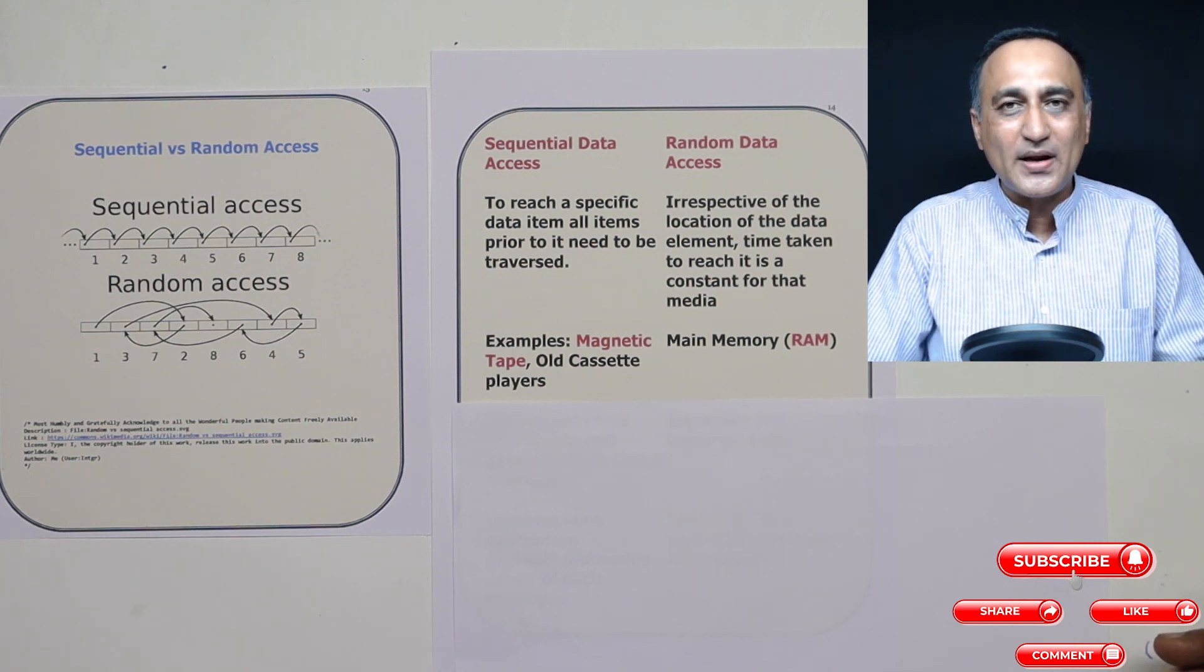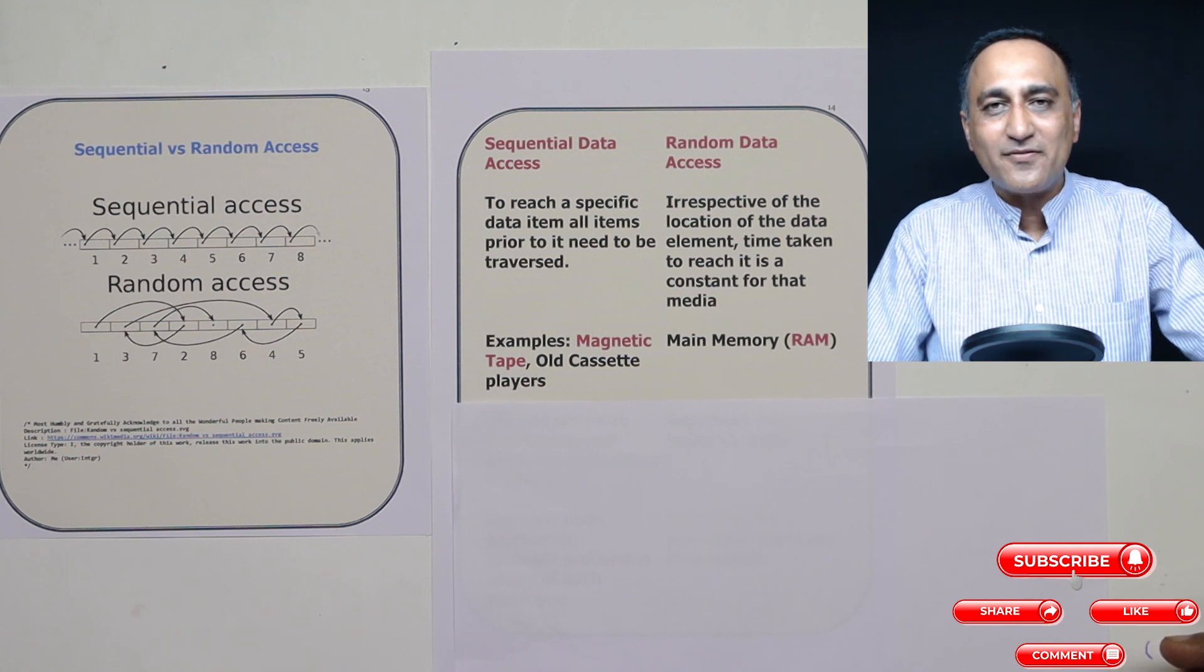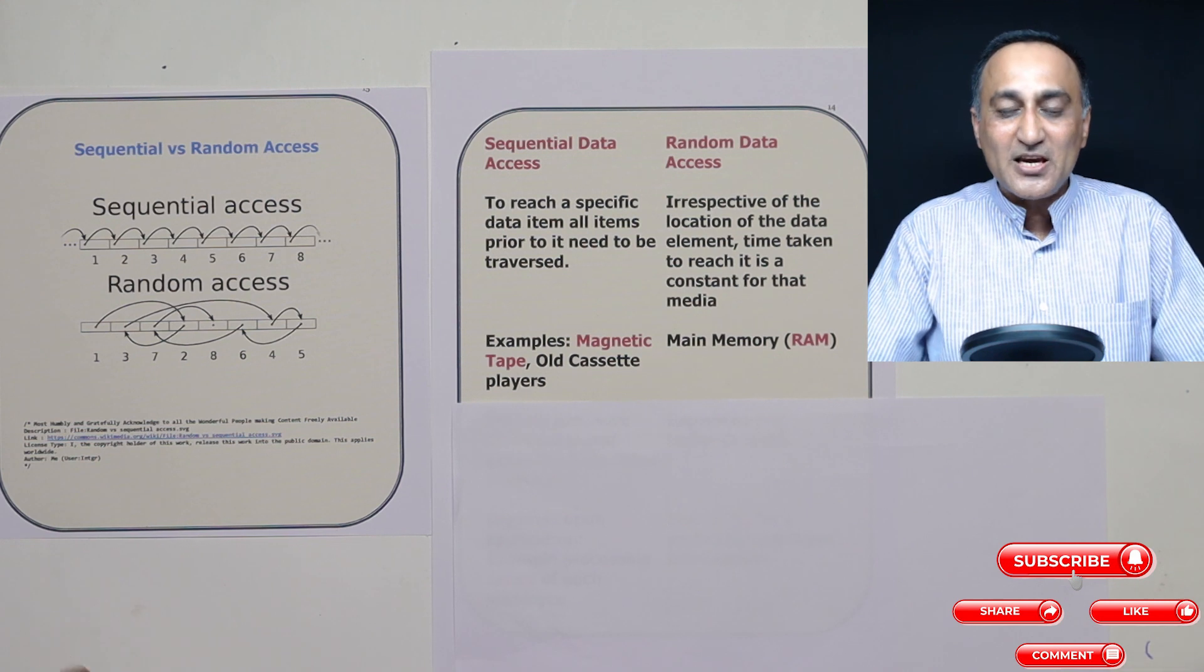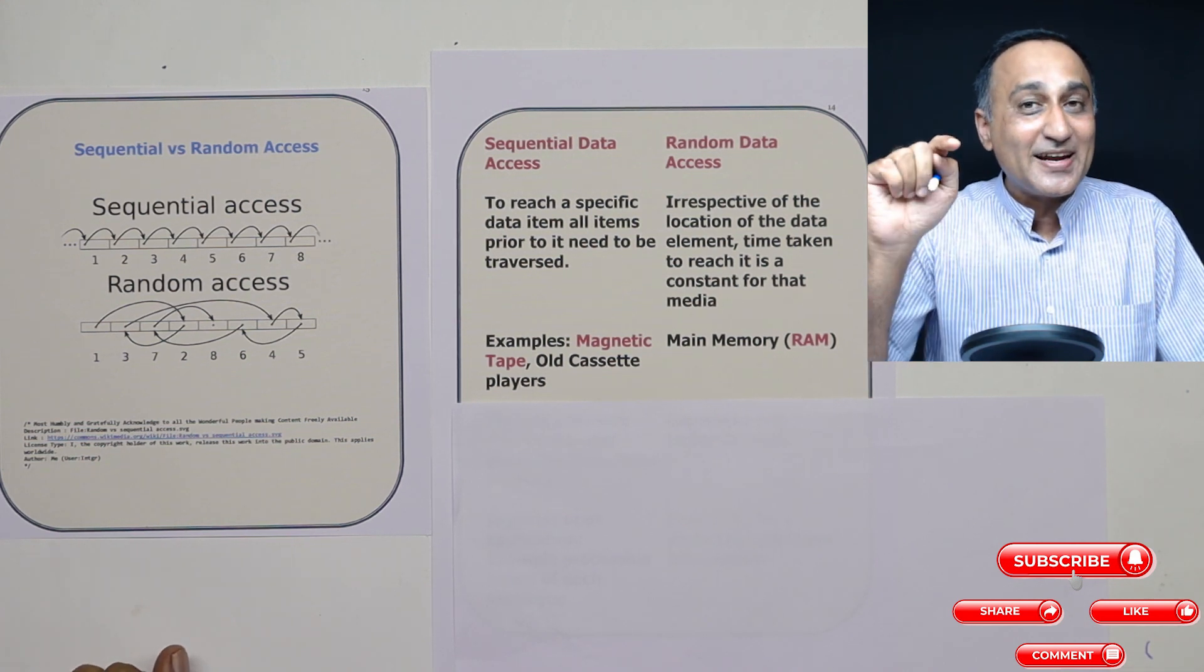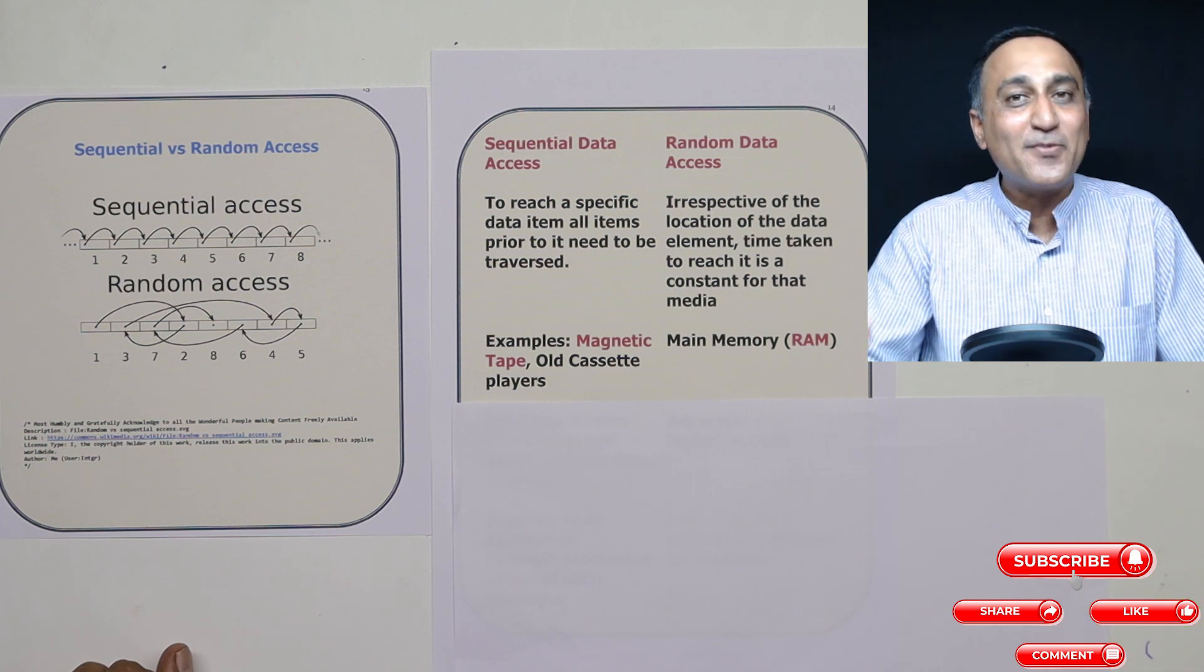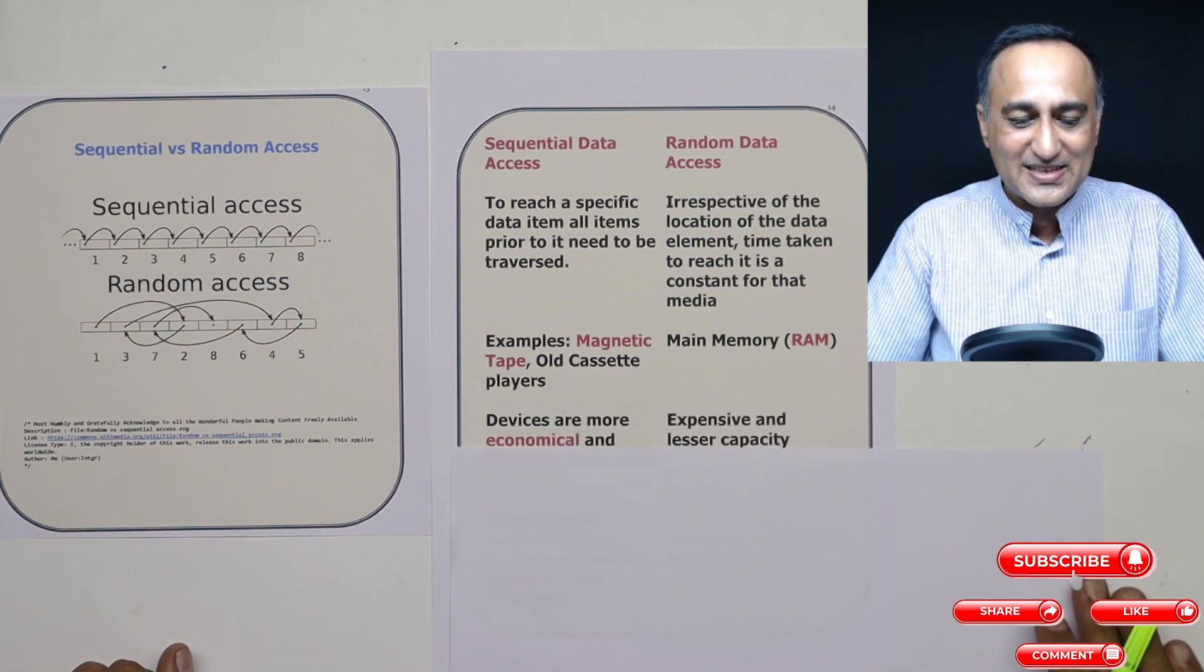From a cassette suppose you are listening to song one, you couldn't directly go to song five because you have to pass through two, three, four and then reach song five. Whereas in your new CD players you can directly go to that particular track and play song number five. So that is an example of random data access.